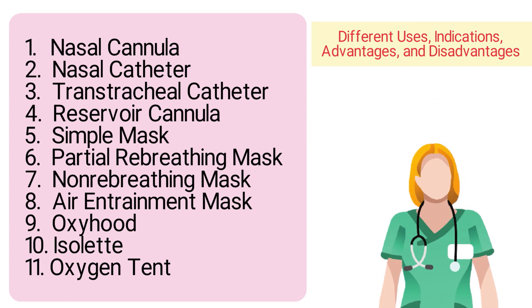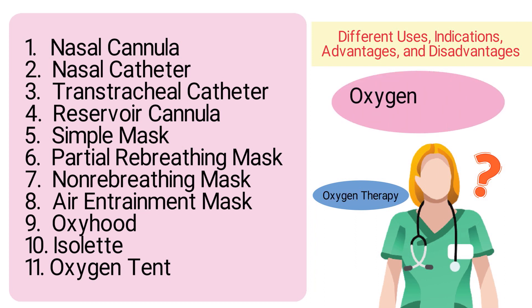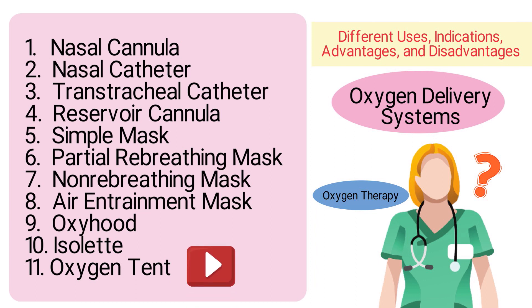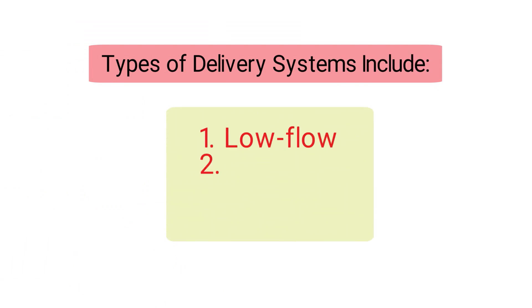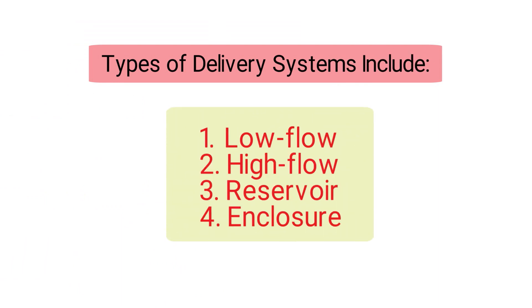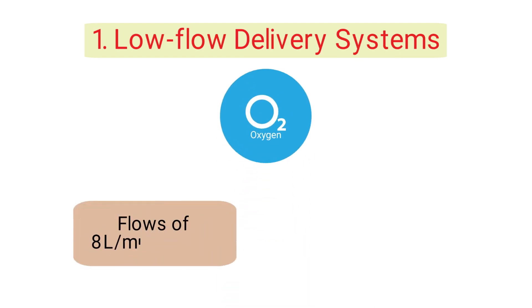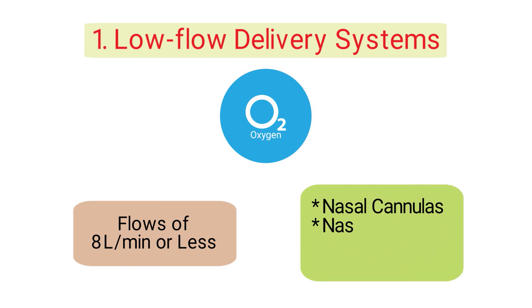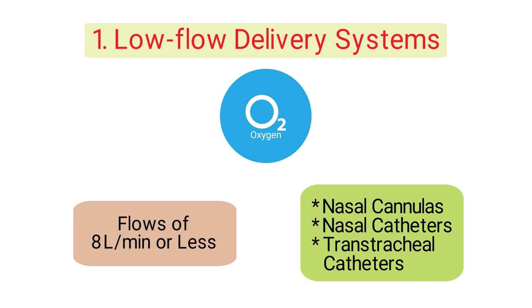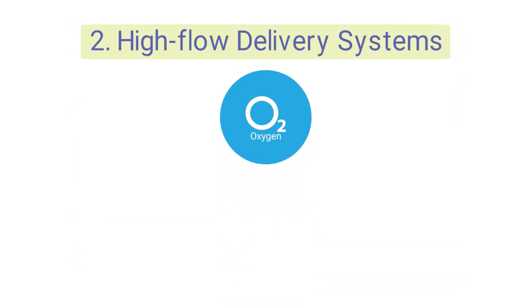Respiratory therapists are required to understand how to deliver oxygen therapy with each delivery system. The different types of delivery systems include low flow, high flow, reservoir, and enclosure. Low flow delivery systems provide oxygen at flows of eight liters per minute or less, and include nasal cannulas, nasal catheters, and tracheal catheters.